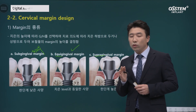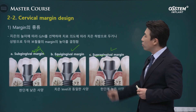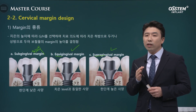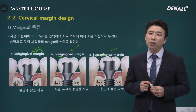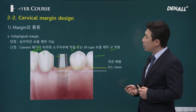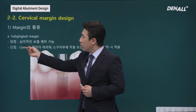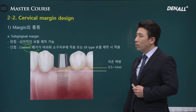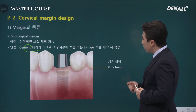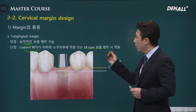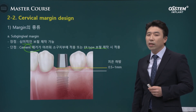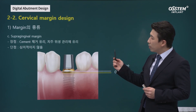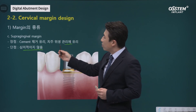At times, supragingival margin is necessary — in cases where oral hygiene is very important or where gingival condition is not good — in order to allow for easy oral hygiene maintenance. In aesthetic zones, subgingival margin should be provided, but a major downside is that it is extremely difficult to remove excess cement. We need to remove cement properly to prevent inflammation. In the case of the ER type, providing a subgingival margin means the cement does not come down significantly, which is a benefit. Supragingival margin is not aesthetic but has many advantages for hygiene maintenance.